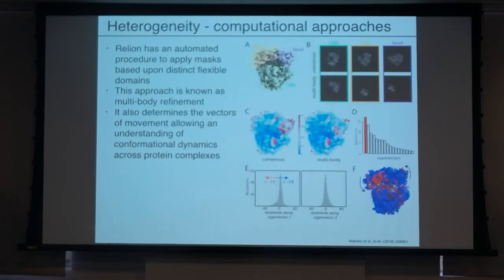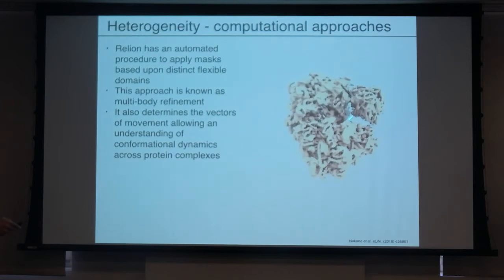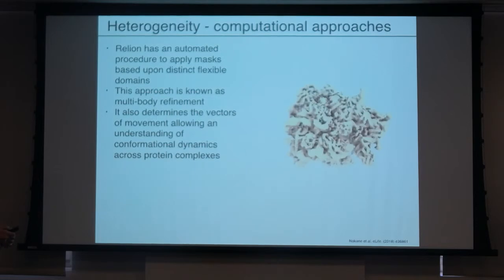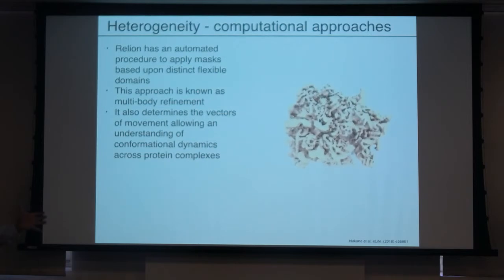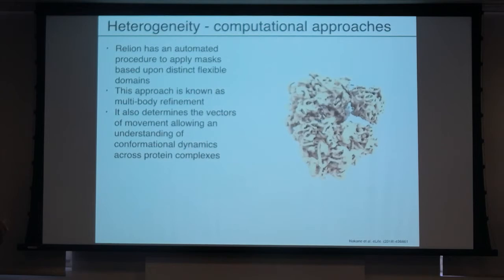Here's an example of multi-body refinement movies. You can see a rotation of this domain and a rotation of this domain working in a concerted fashion — they're not independent — which gives you an idea to propose how a mechanism might work because you have this concerted movement of two domains. You have a rocking and then a twisting of an adjacent domain that might influence the way the protein works, and you can design experiments to test that hypothesis.